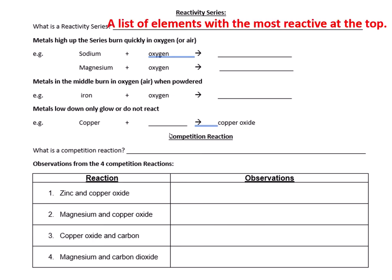First of all, from the worksheet last week: a reactivity series is a list of elements with the most reactive at the top and the least reactive at the bottom.